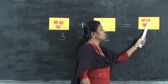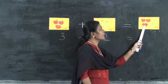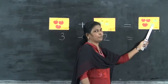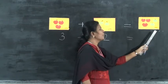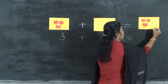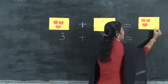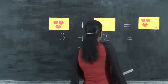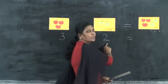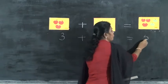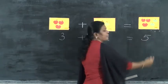One, two, three, four, five. Five. The answer is five. Three plus two is equal to five.